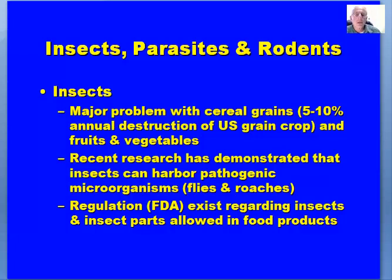Insects, parasites, and rodents can cause spoilage and deterioration of food not only through consuming the food itself — it's estimated that about 5 to 10 percent of the annual grain crop is destroyed by insects, parasites, and rodents — but also through the loss of fruits and vegetables. Recent research has demonstrated that insects can harbor pathogenic microorganisms. Flies and roaches carry pathogens — research published looking at the gut contents of flies and roaches has isolated foodborne pathogens from these insects. Regulations exist regarding insect and insect parts allowed in food products, known as defect action levels.